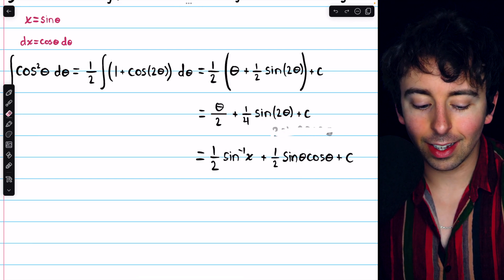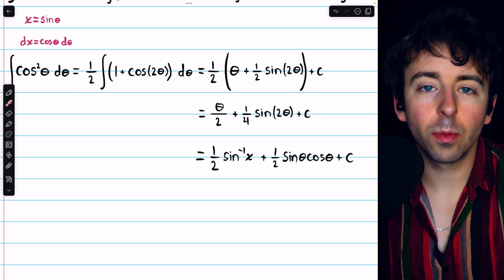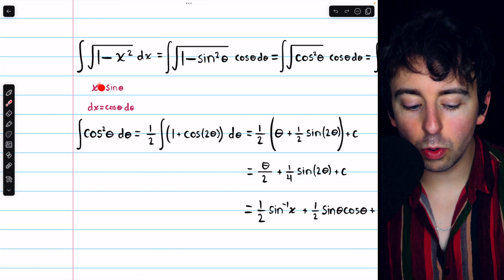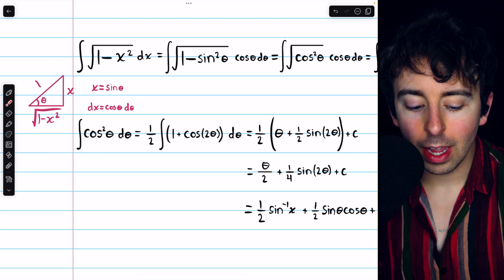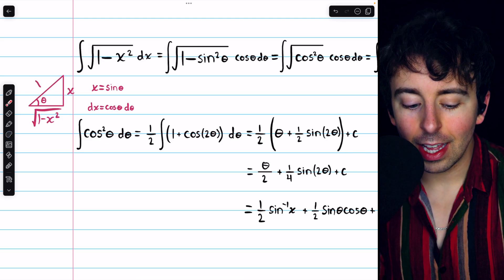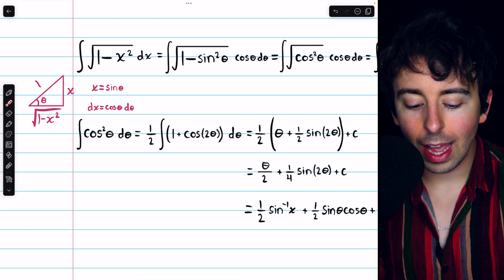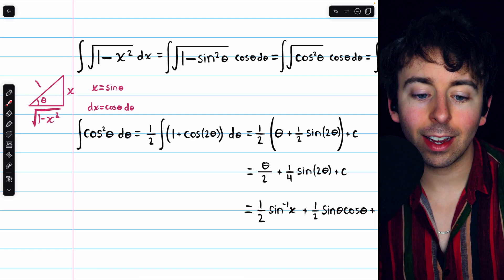Now, we know that sine theta is just x, so that's straightforward. As for cosine theta, we have to consider a right triangle. Going back to the substitution we made, and thinking about this in terms of a right triangle, if this is theta, then sine theta, opposite over hypotenuse, has to equal x. Hence, the opposite side could be x, and the hypotenuse would have to be 1.